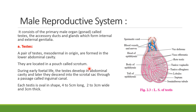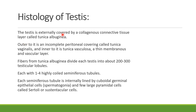The testis is located in the pouch of the scrotum. During early fetal life, the testes develop in the abdominal cavity and later descend into the scrotal sac through a passage called the inguinal canal. Each testis is oval in shape, four to five centimeters long, two to three centimeters in width, and three centimeters thick.